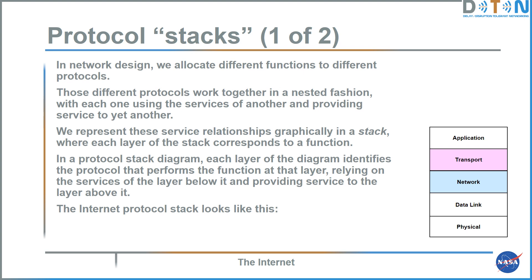In a protocol stack diagram, each layer identifies the protocol performing the function at that layer, relying on the services of the layer below and providing service to the layer above. For the internet protocol, the stack has application protocols at the top, transport protocols — typically TCP — then network protocols — typically IP — then data link protocols, and physical protocols that convey data link frames. The stacking of protocols is reflected in the structure of protocol data units: as data arrives at a node, it is handled first by the lowest layer and then by successively higher layers.